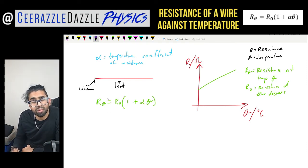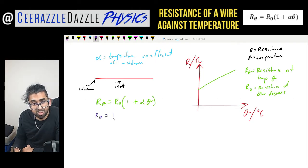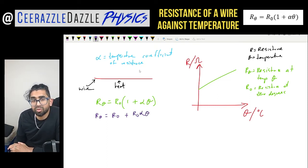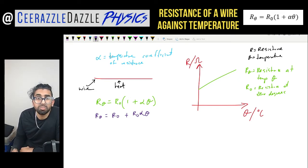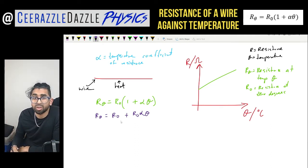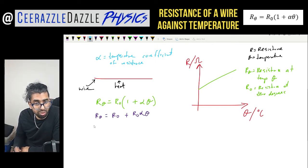Expanding the bracket: R(θ) = R₀ + R₀αθ. You might be wondering what the units of the temperature coefficient of resistance α are. Simply plug the units into both sides of the equation, since every equation is dimensionless. Resistance is measured in ohms, so: [Ω] = [Ω] + [Ω][α][°C].